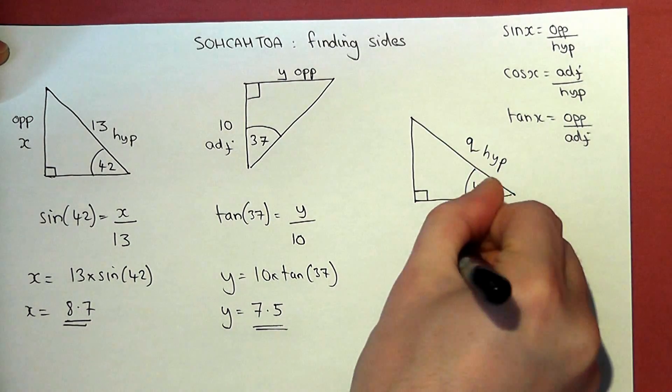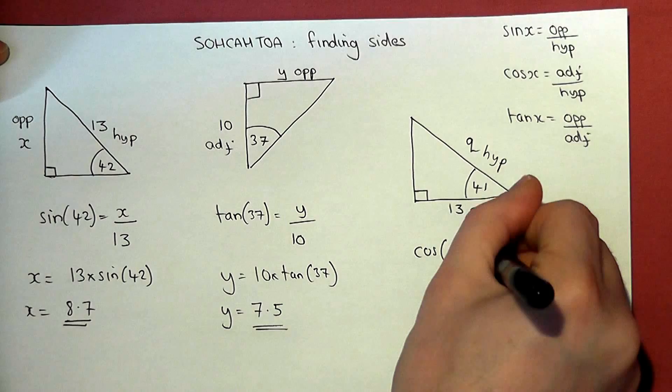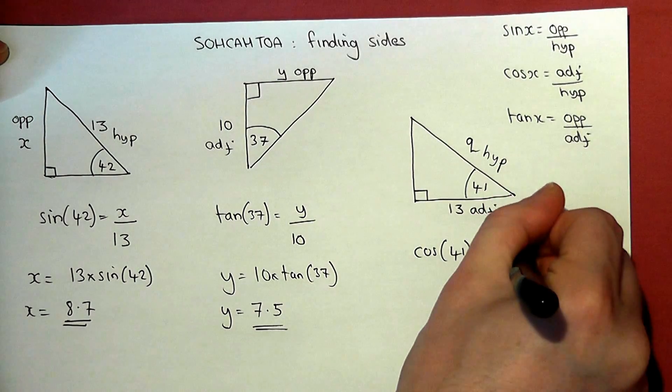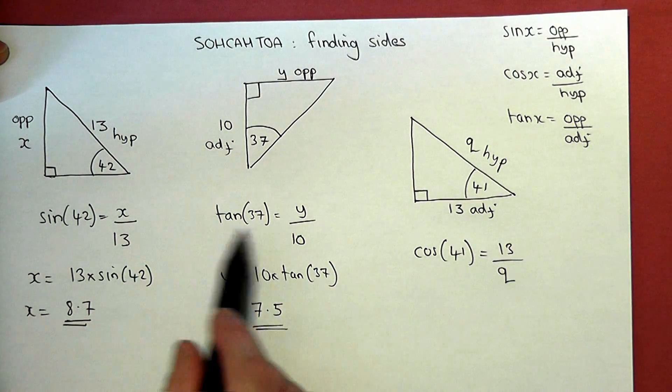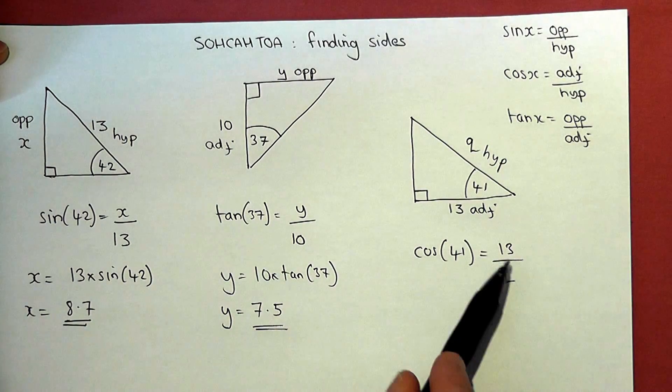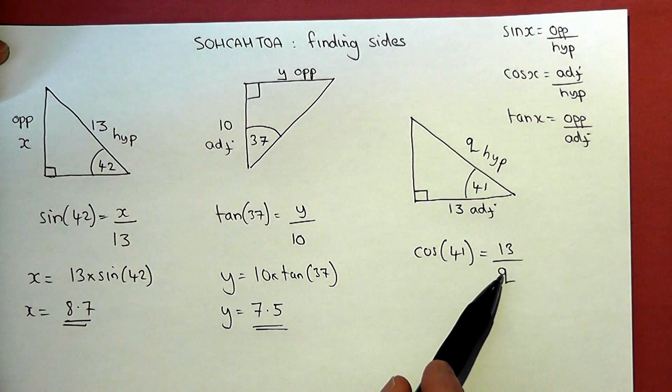So cos of the angle, which is 41 in this case, is the adjacent 13 over q, which is the hypotenuse. Now then, this is a bit different to the first two equations, because the unknown is now below the equation.